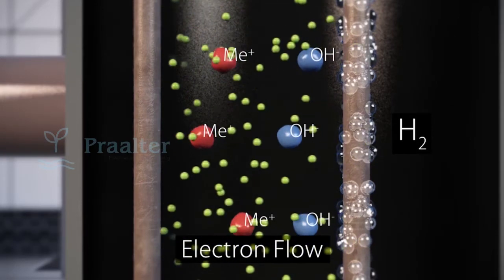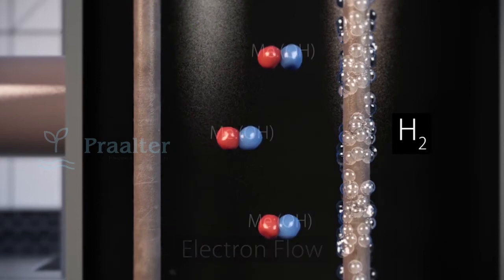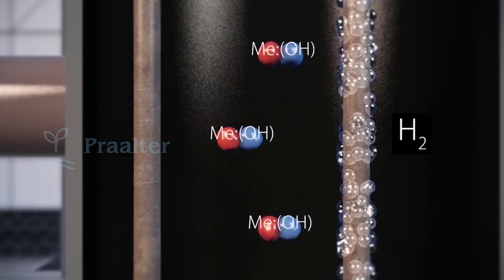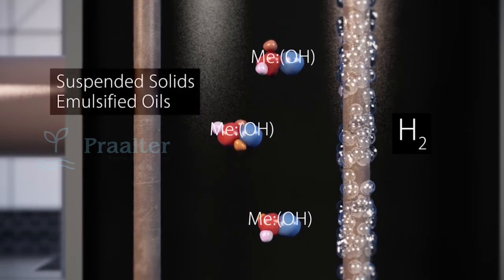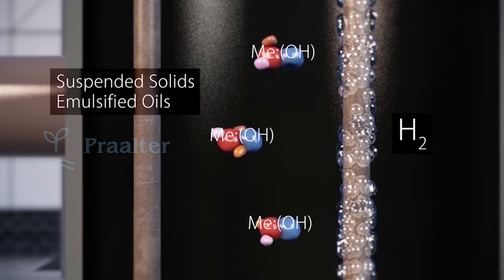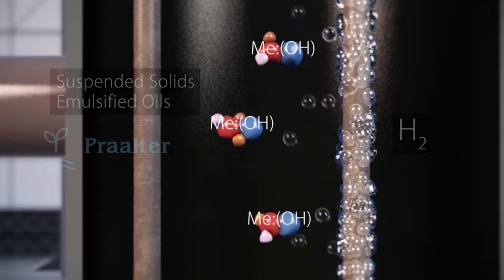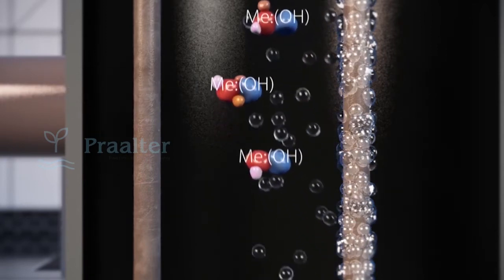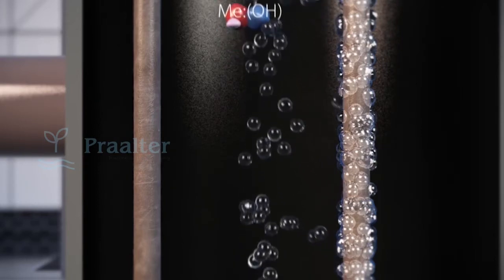As the reaction begins, metal ions complex with hydroxyl groups and form large flocs consisting of metal and other components. Suspended solids and most of the hydroxyls are readily entrained into the floc because of its destabilized surface charges. Finally, hydrogen gas bubbles are separated and lift the floc to the top of the reactor. This cooperative action makes the process highly effective and efficient.